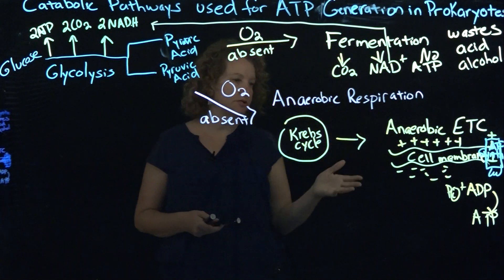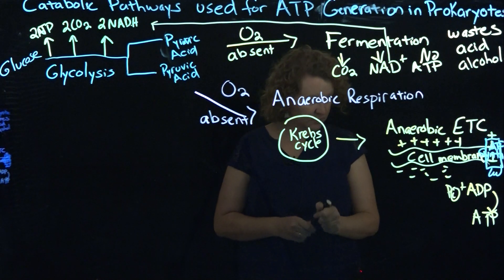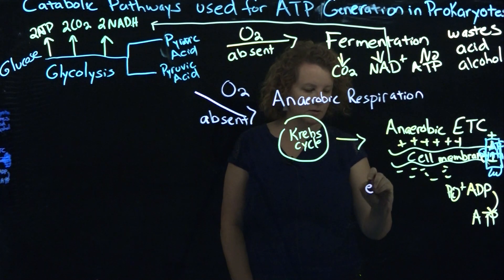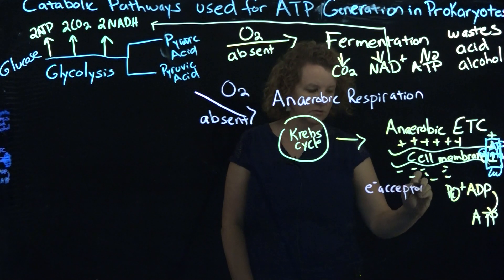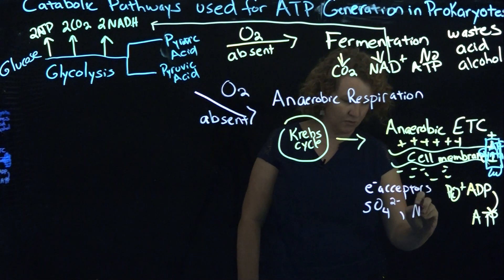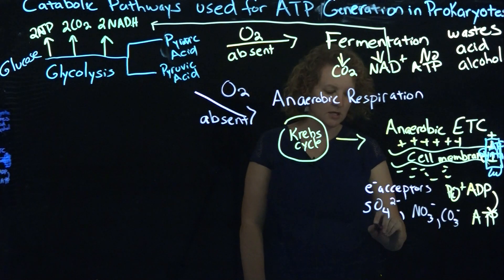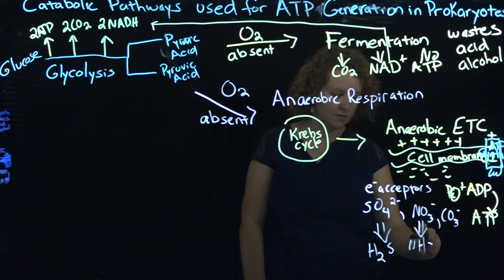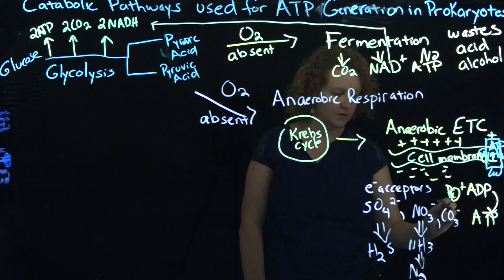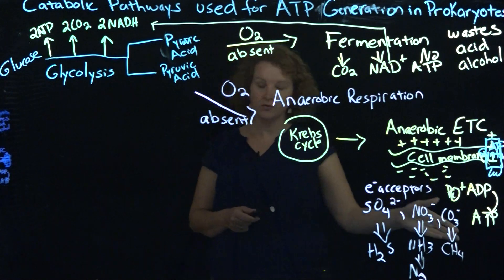This is pretty much what you see in the aerobic chain, except there's no oxygen. These are organisms that cannot live in the presence of oxygen, so their electron acceptors are non-oxygen molecules — things like SO3 or SO4, NO3, and carbonate. Those are then reduced down into end products like H2S, ammonia, elemental nitrogen, and methane. So those end products are what you would look for to identify these organisms.